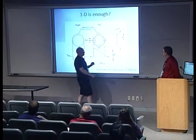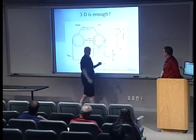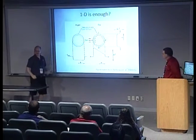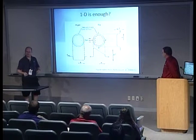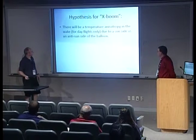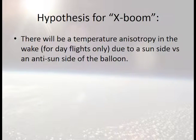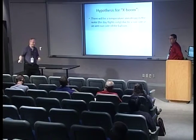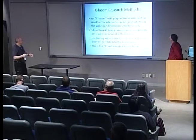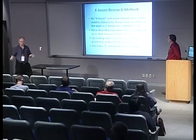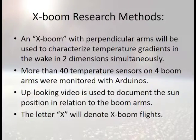To look for this asymmetry, we built a two-dimensional wake boom — as opposed to just measuring in one dimension. Our hypothesis for this 'X boom' is that one arm might show uniform elevated temperature while the other shows asymmetric elevated temperature, with the hot side being the sun side. We're going to have two perpendicular arms, more than 40 temperature sensors on four arms total, use up-looking video to tell which is the sun side, and look for this asymmetry. We call these X boom flights — hence X flights.